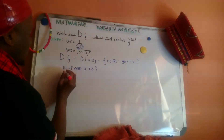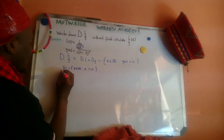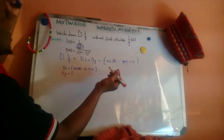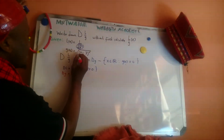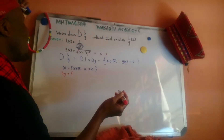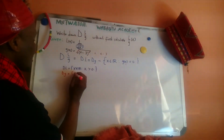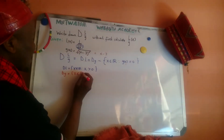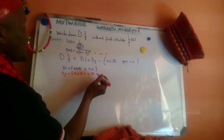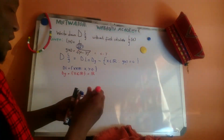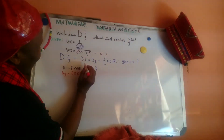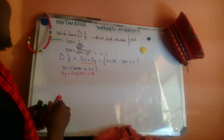Now let's find the domain of g. g(x) = (x - 3)² is a linear-type function. For any such function you can get any number, so the domain of g is all real numbers — every number is in the domain of g.